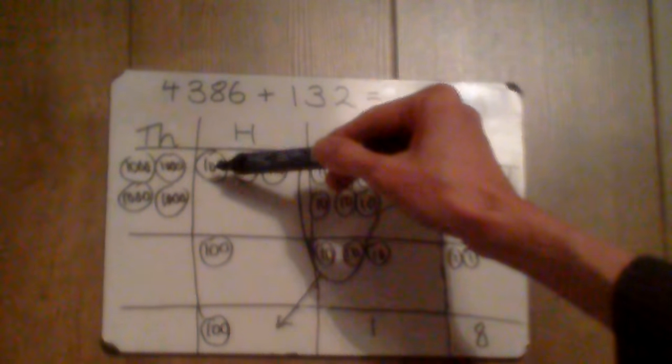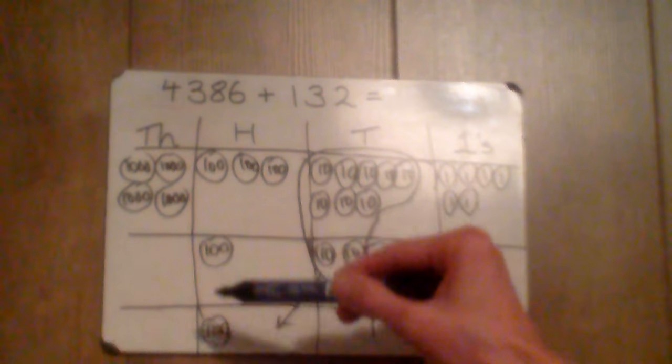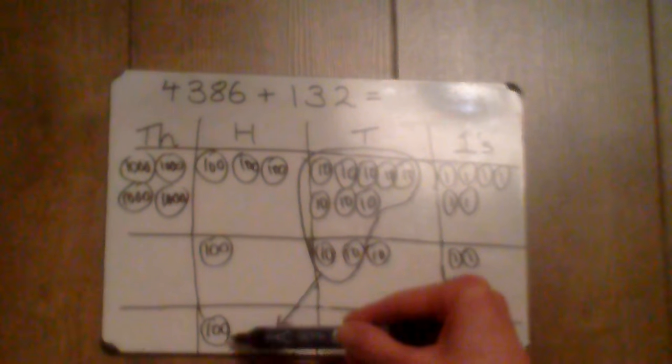In my hundreds column I have 1, 2, 3, 4, 5, because this is the one I regrouped.